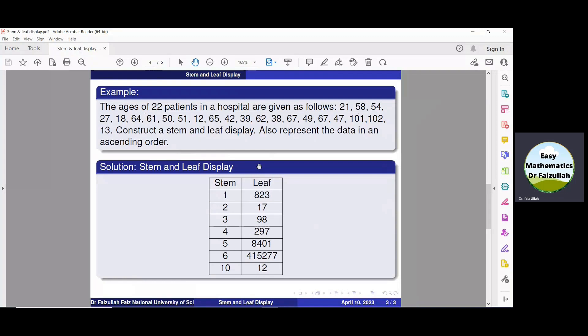So let us first of all write the stem from this data. Here, the smallest stem in this data is 1, so we write 1 here. The next smallest is 2, the next smallest is 3, then 4, then 5, then 6 and then 10. So we write all the stems here: 1, 2, 3, 4, 5, 6 and then 10.